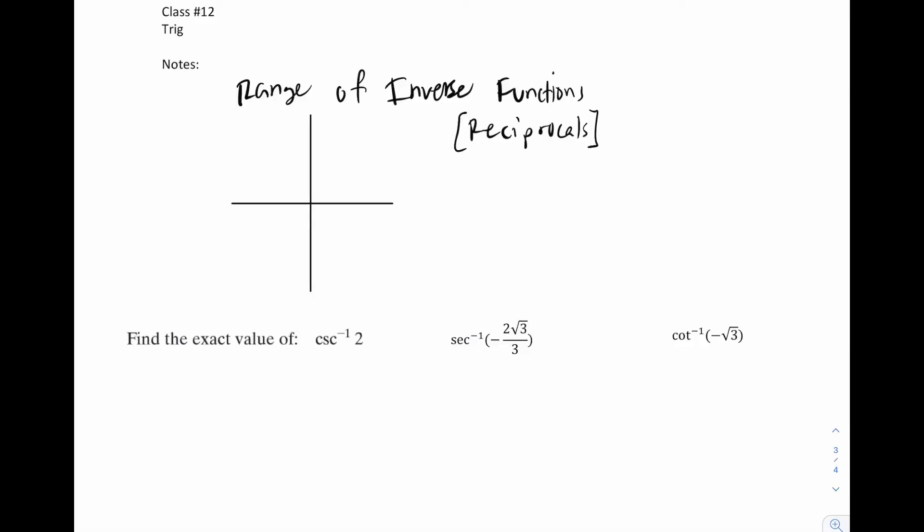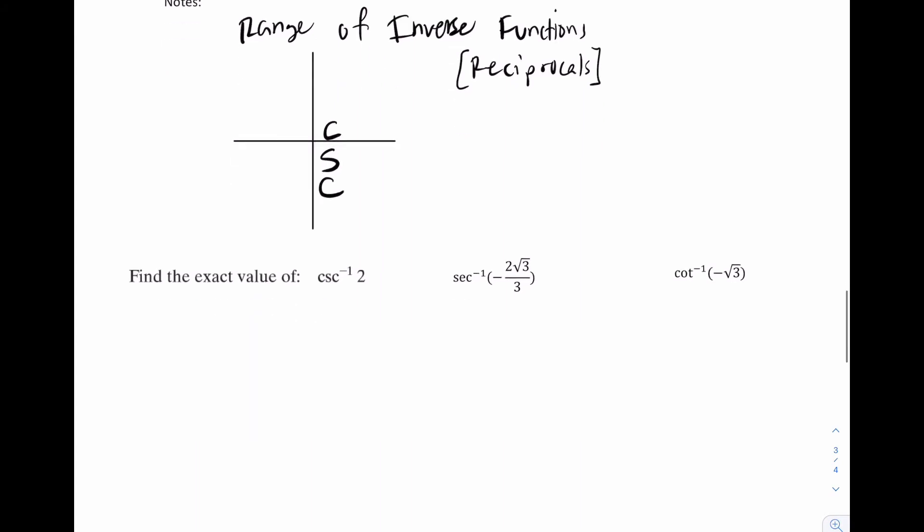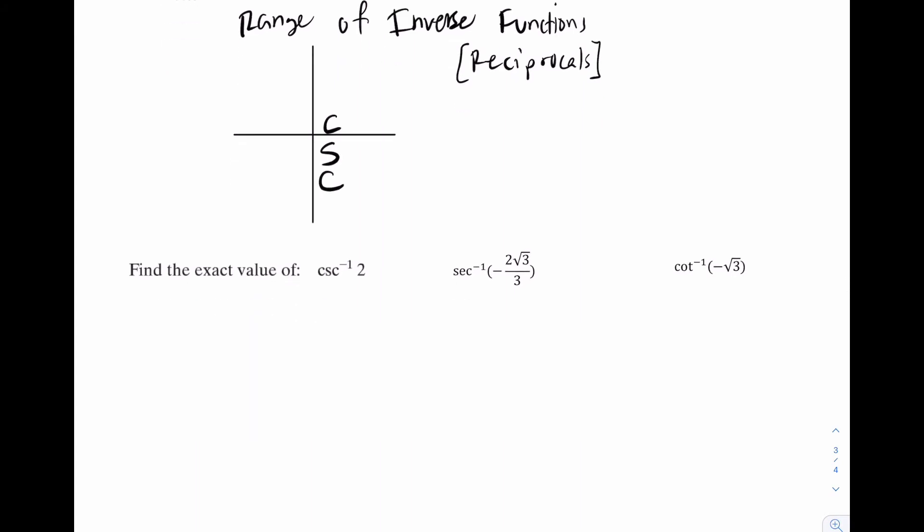In this next part of the lesson, we're going to be talking about the inverse functions in regards to the reciprocals. So like cosecant inverse, secant inverse, cotangent inverse, and a few other more abstract problems. But first, I'm going to give you the ranges of these. So cosecant is very similar to sine. It's going to be one and four. So if you want cosecant inverse of two, highlight one and four.